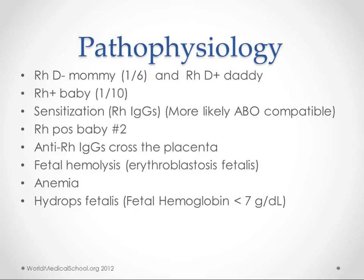What happens here is the mother who doesn't have this RH antigen — if they come into contact with the baby's blood, which does have the RH antigen — then an immunologic reaction happens. The mom, seeing this as a foreign body, produces antibodies to it. So they make these anti-RHD IgGs.